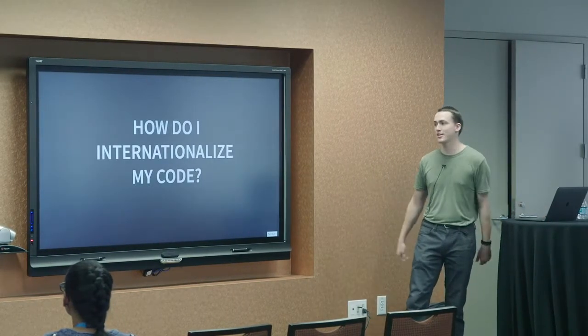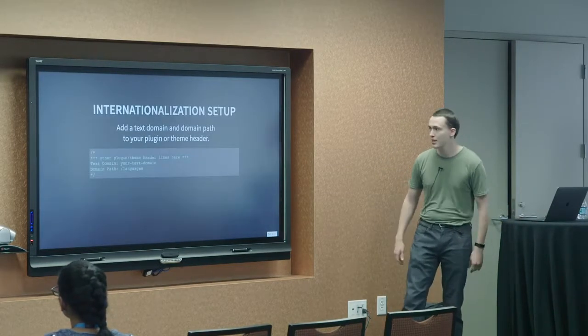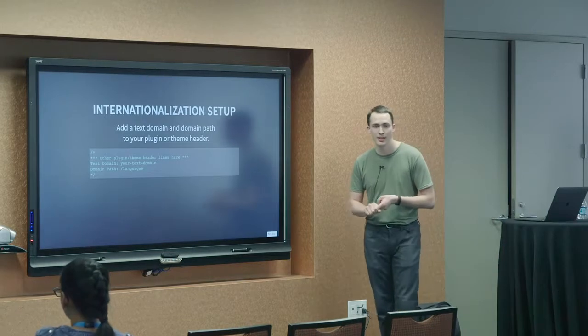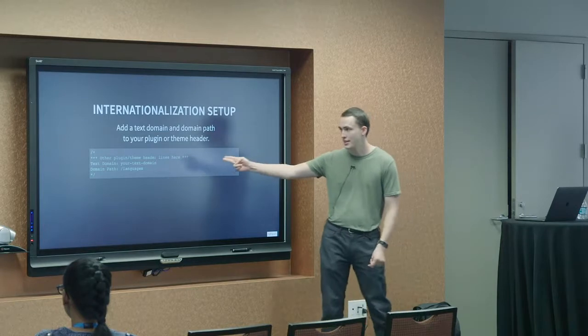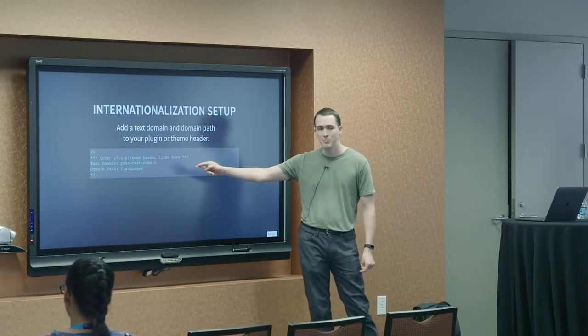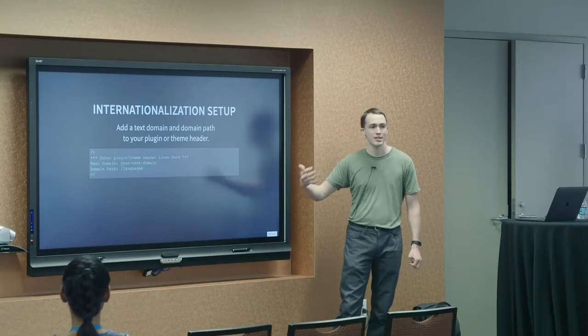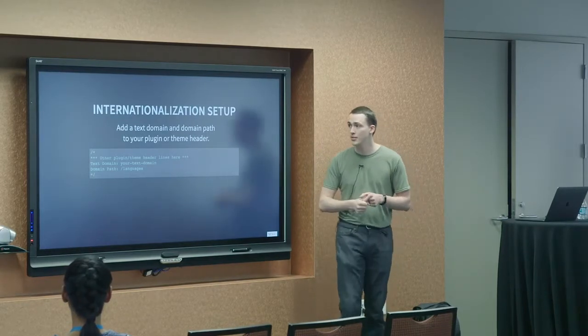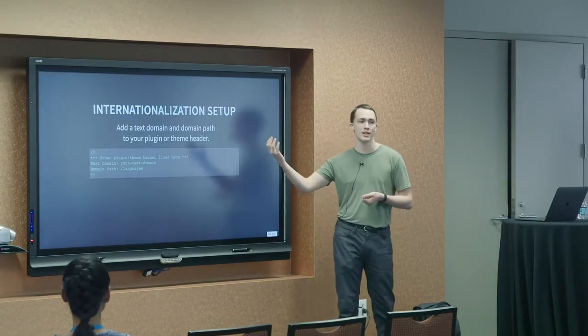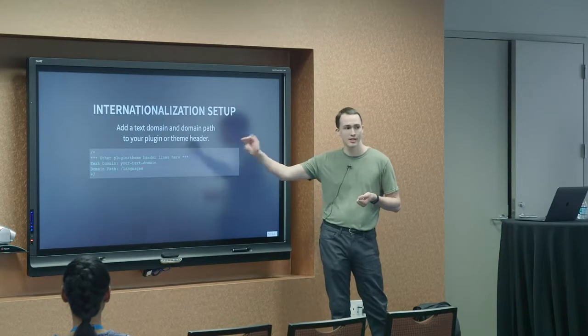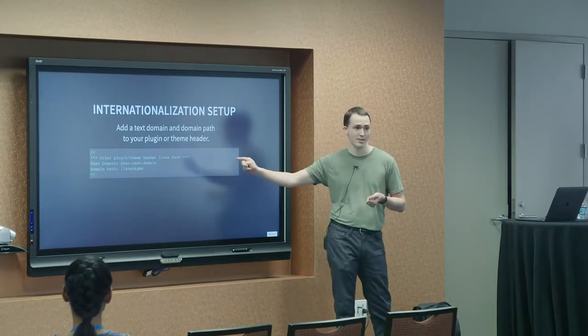So how do I internationalize my code? The first step is if you're writing a theme or a plugin is in the plugin or themes header. You just add the text domain and the domain path lines and that kind of starts the process. If you're, especially if your code is, if you wrote a plugin and you've released it on WordPress.org, having the text domain defined is one of the most important steps.